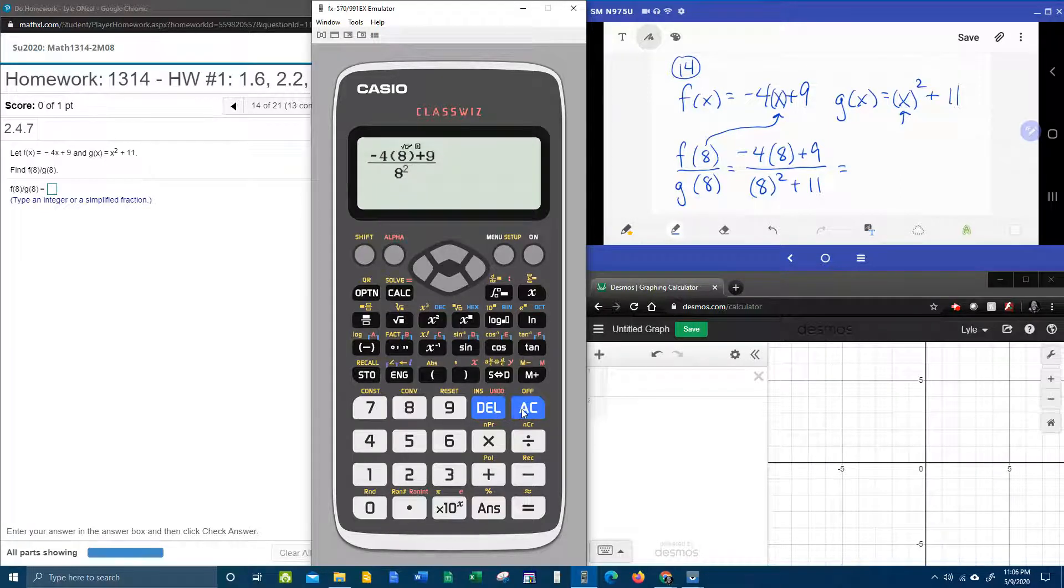Move to the bottom. We can do 8 squared. Uh-oh, you're thinking, I needed the parentheses. We'll just delete it and put parentheses. Actually, I didn't need the parentheses. But if it feels good, do it.